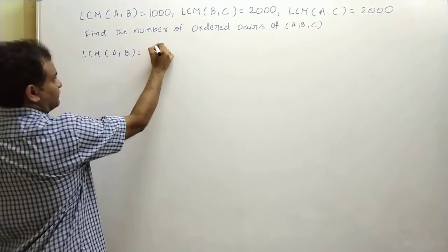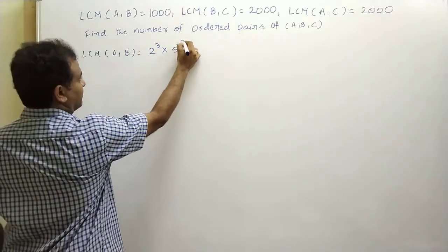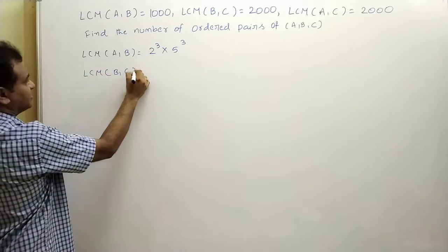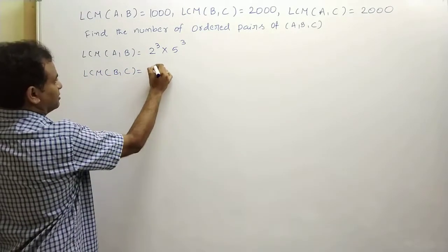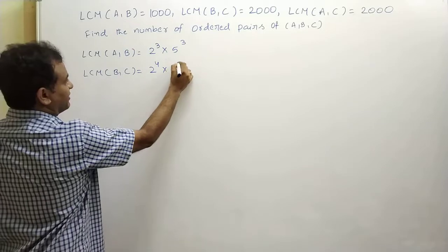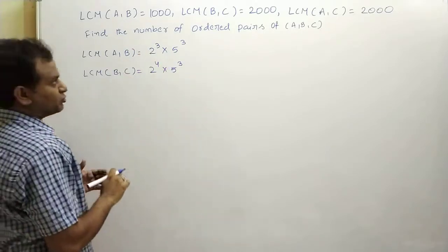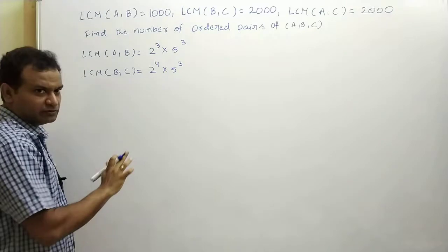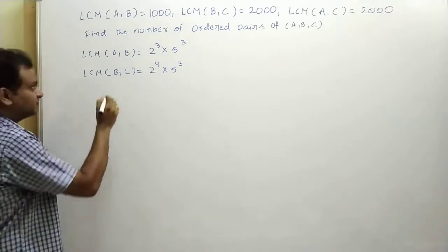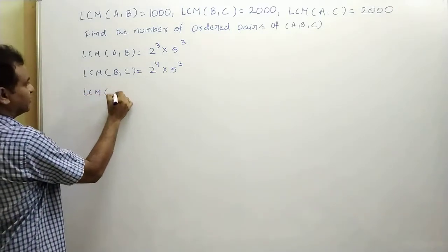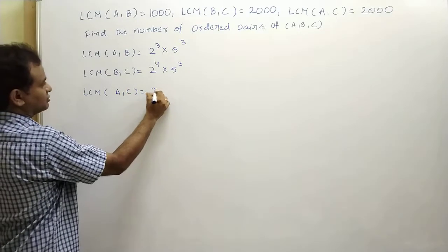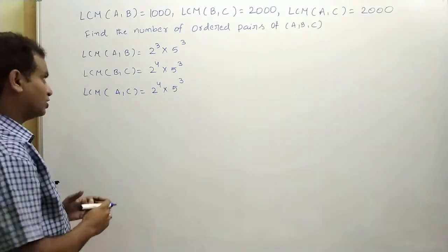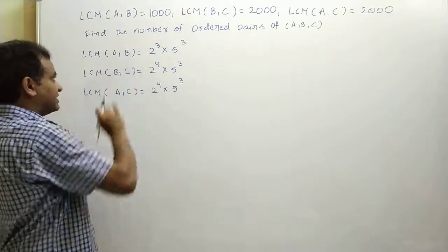1000 is 10 cubed, so we can write 2³ × 5³. Similarly, LCM of (b, c) is 2000, therefore 2⁴ × 5³, because 2000 is 2 × 1000, therefore 2 × 2³ × 5³ gives 2⁴ × 5³. LCM of (a, c) is also equal to 2⁴ × 5³.